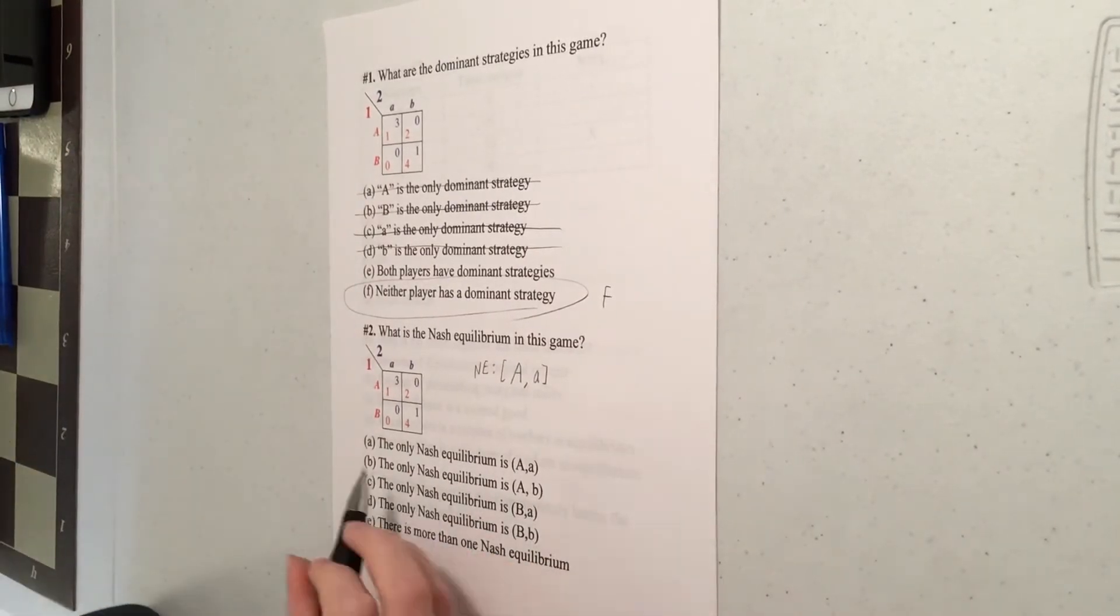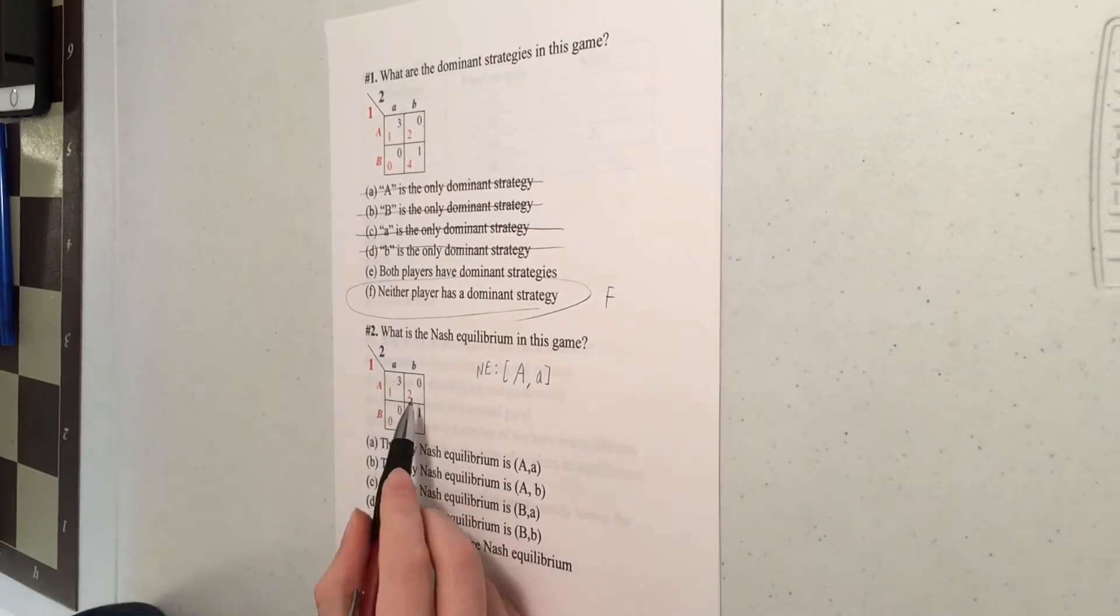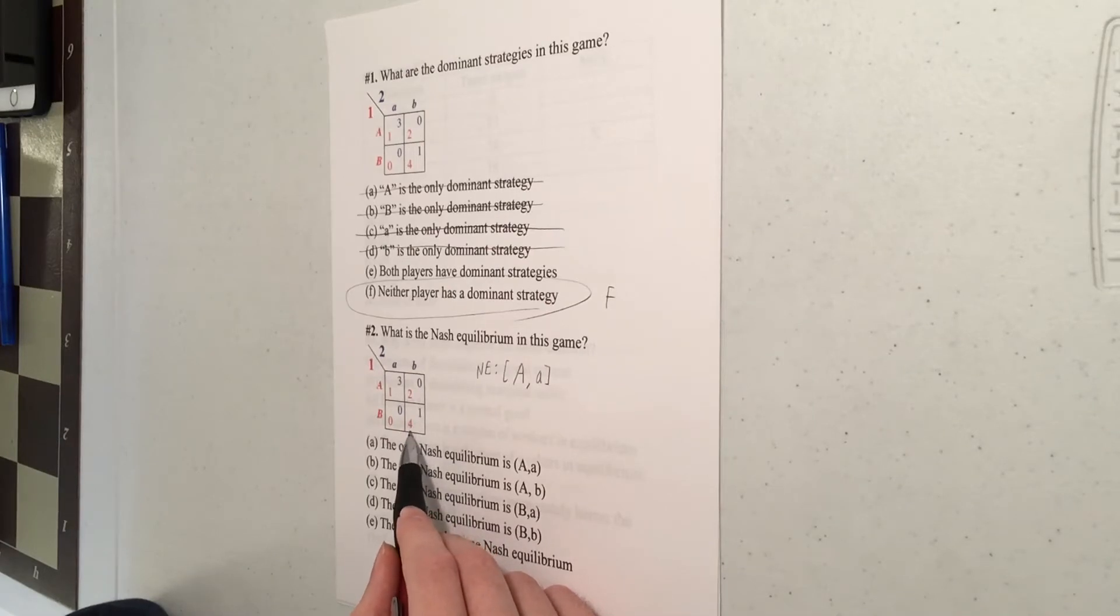So because neither player wants to switch, AA is a Nash equilibrium. Now, don't be too hasty here. Don't circle option A yet. That's because there could be more than one Nash equilibrium. We got to check the other possibilities. So is AB, big A little b that is, is that a Nash equilibrium? Well, let's see. Player one is currently getting two in this outcome. If they switch strategies and start playing big B instead, they would get four. So player one would want to change strategies. So this outcome here is not stable. So big A little b is not a Nash equilibrium.